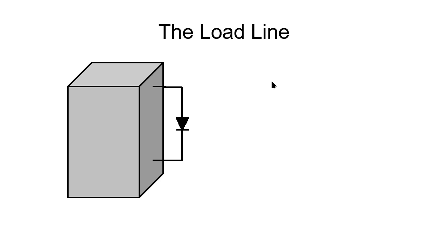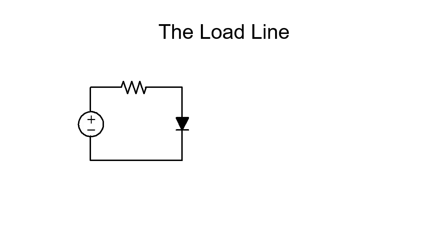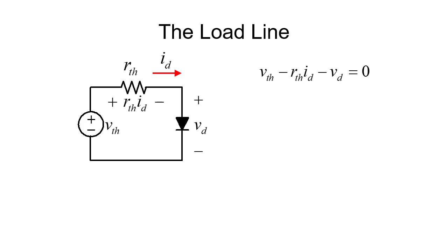We shall demonstrate this in what follows. Consider this scenario: the real diode is connected to a linear circuit enclosed in a gray box. That linear circuit can be represented with a Thevenin equivalent. Let's find the voltage and current in the diode. The current in the diode produces an ohmic voltage drop across the resistor R_th — i.e., I_d · R_th.